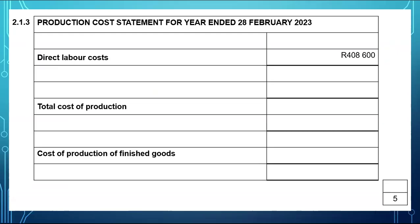You will start with your direct material cost, and this one we took it from 2.1.1, which was $888,300. When you add it with direct labor cost, you will get your prime costs. So $888,300 plus $408,600 will give you $1,296,900.